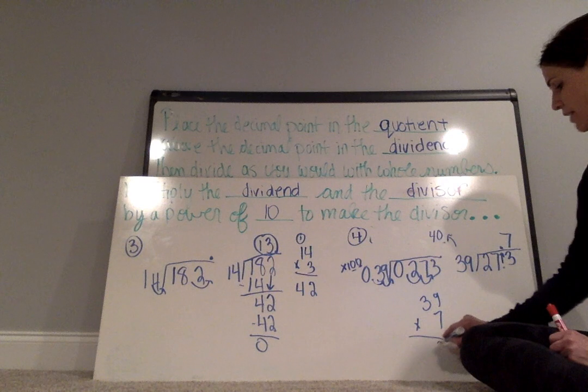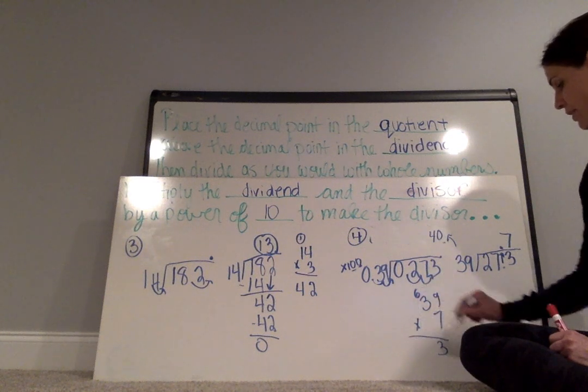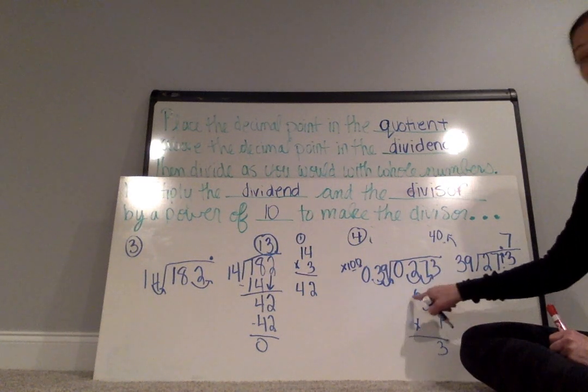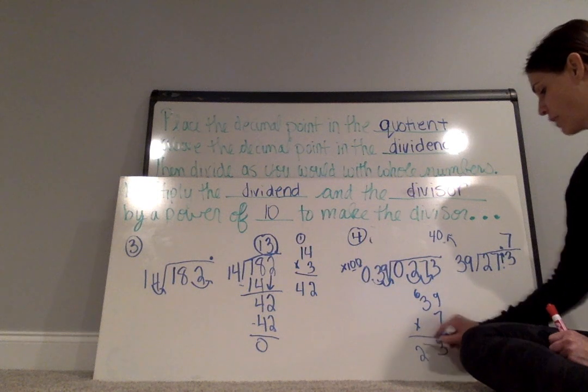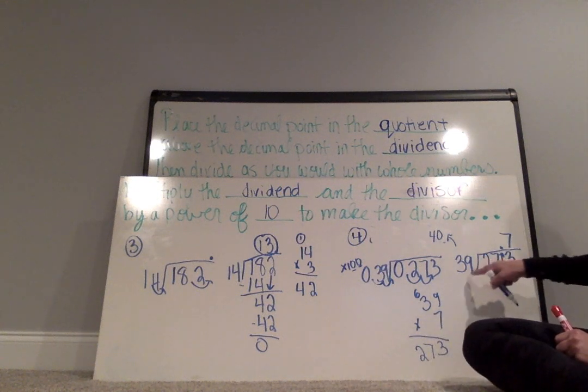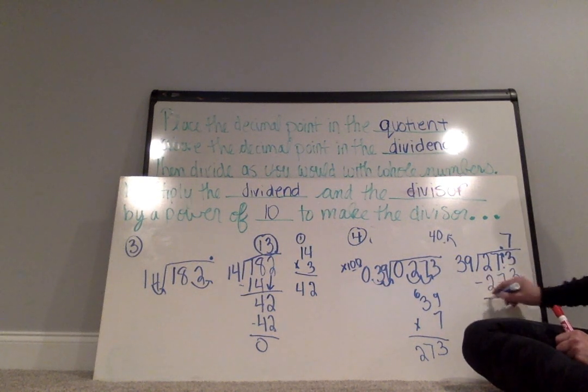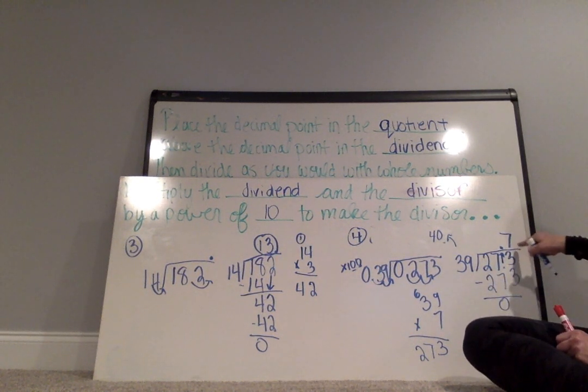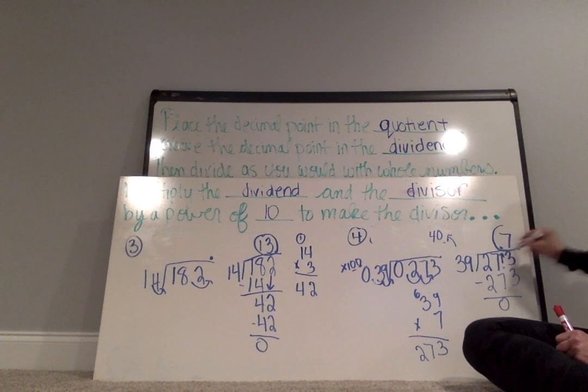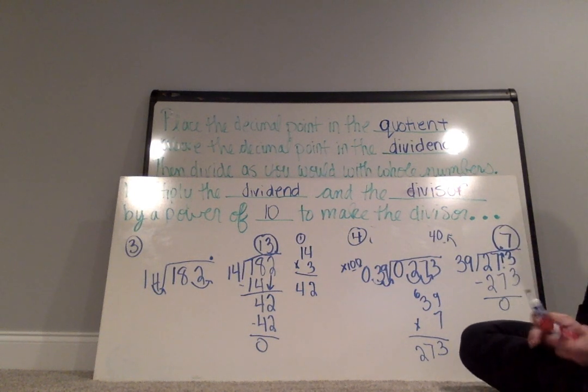So 7 times 9 is 63. 3 times 7 is 21, plus 6 would be 27. So in fact, 39 goes into 273 seven times because I have a remainder of 0. So my quotient is 0.7, which in other words is 7 tenths.